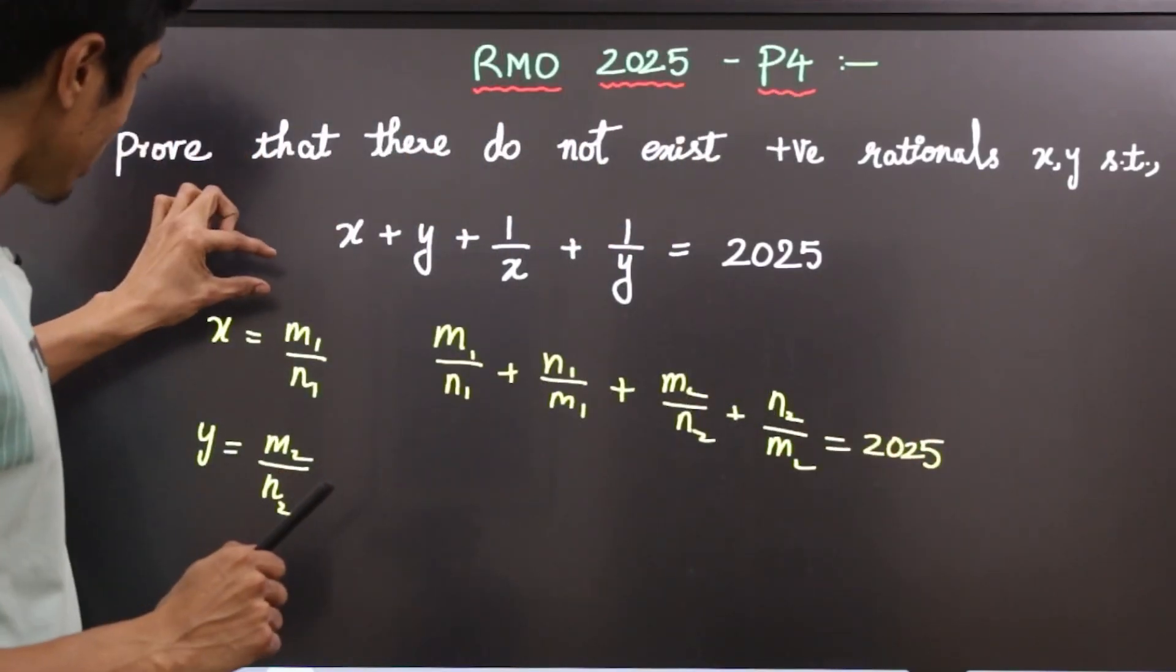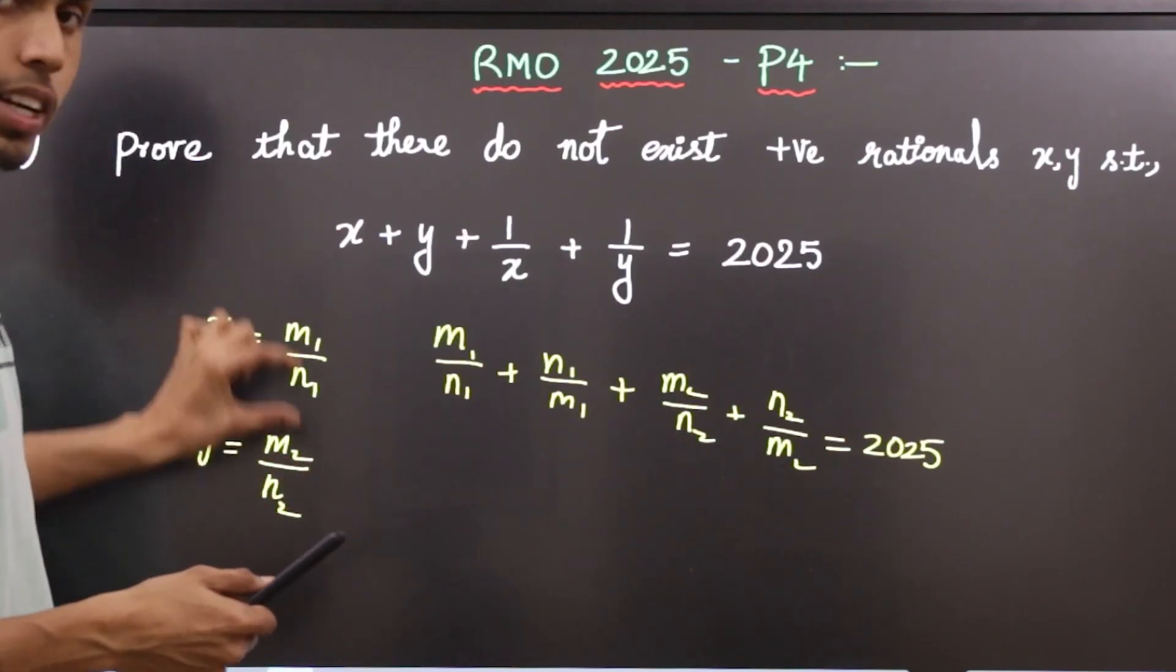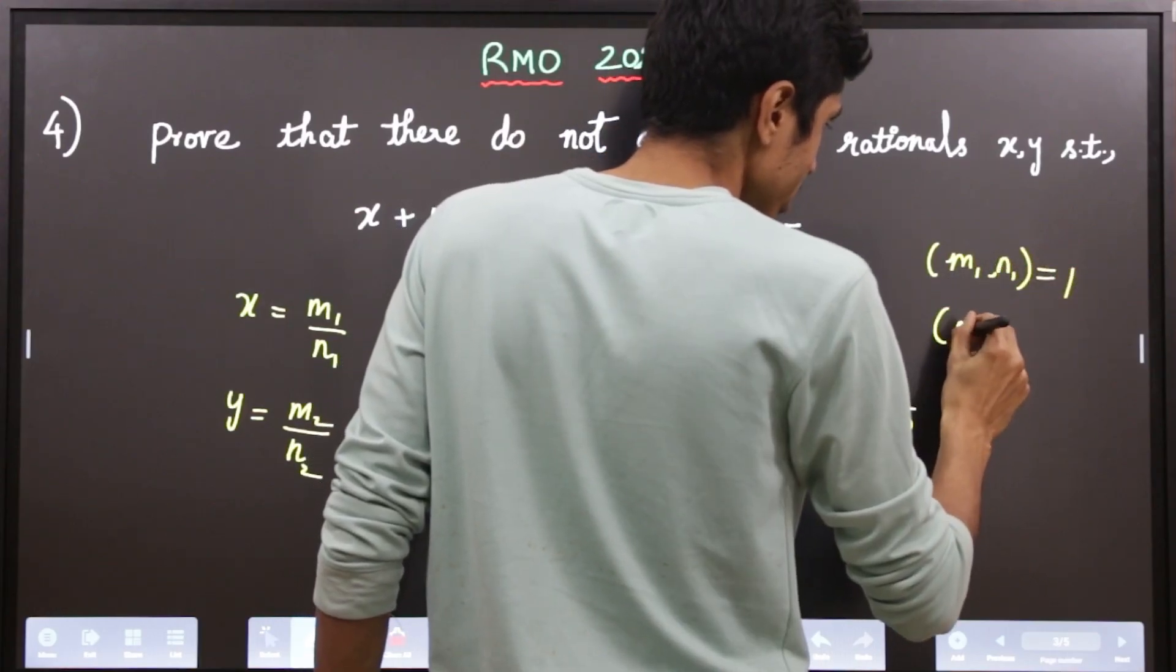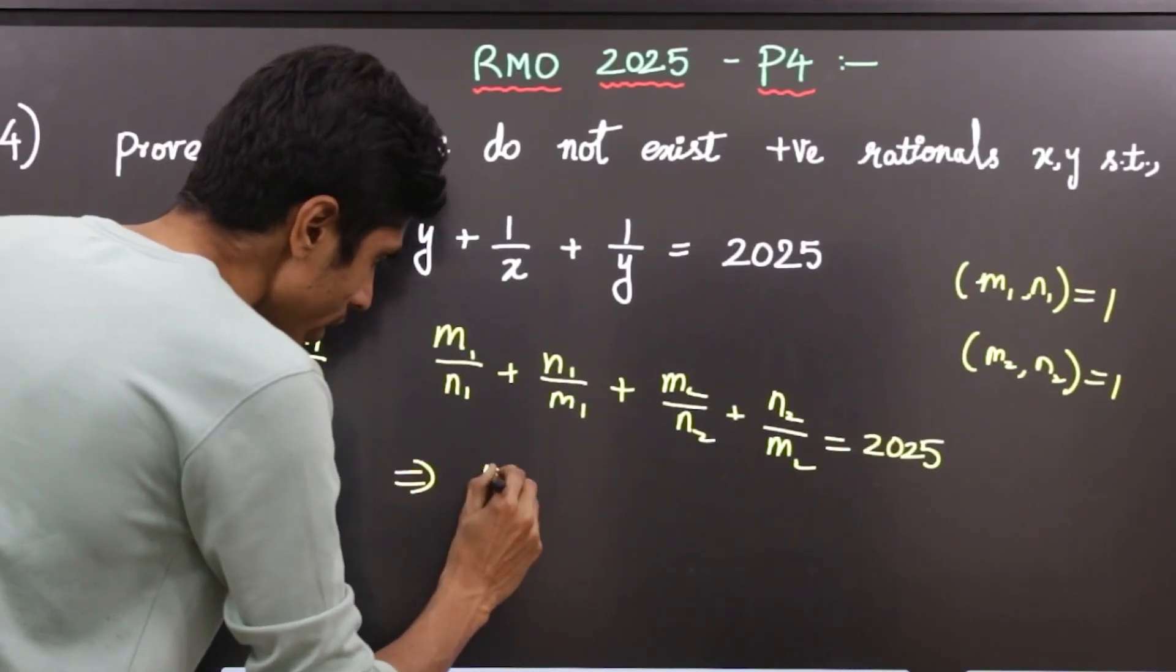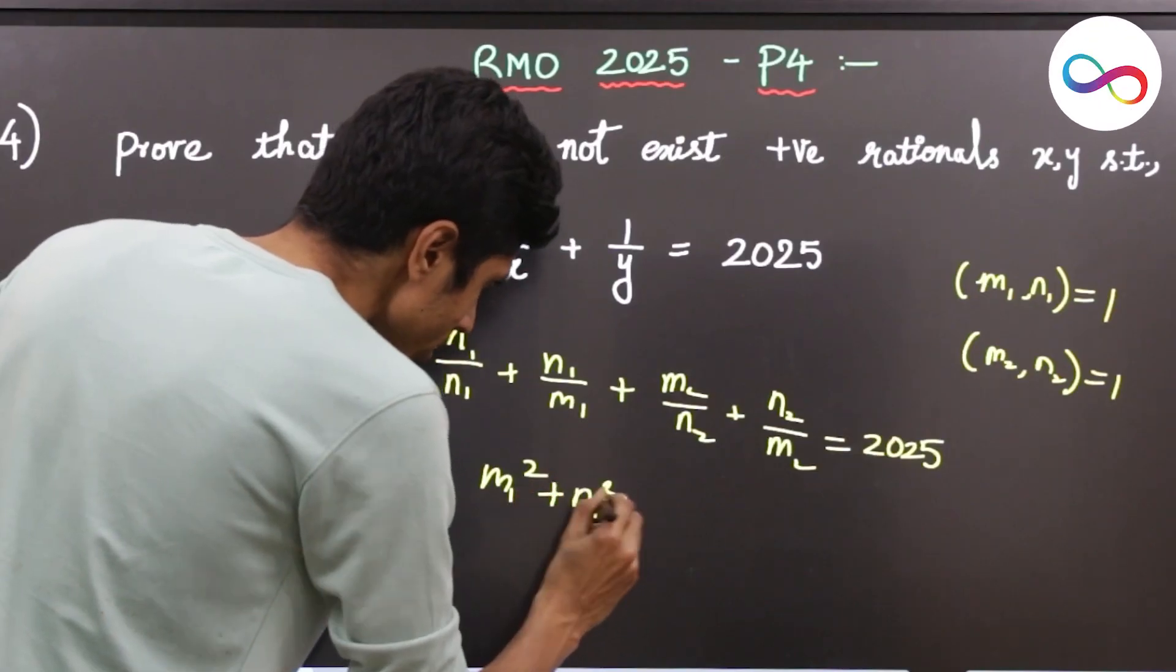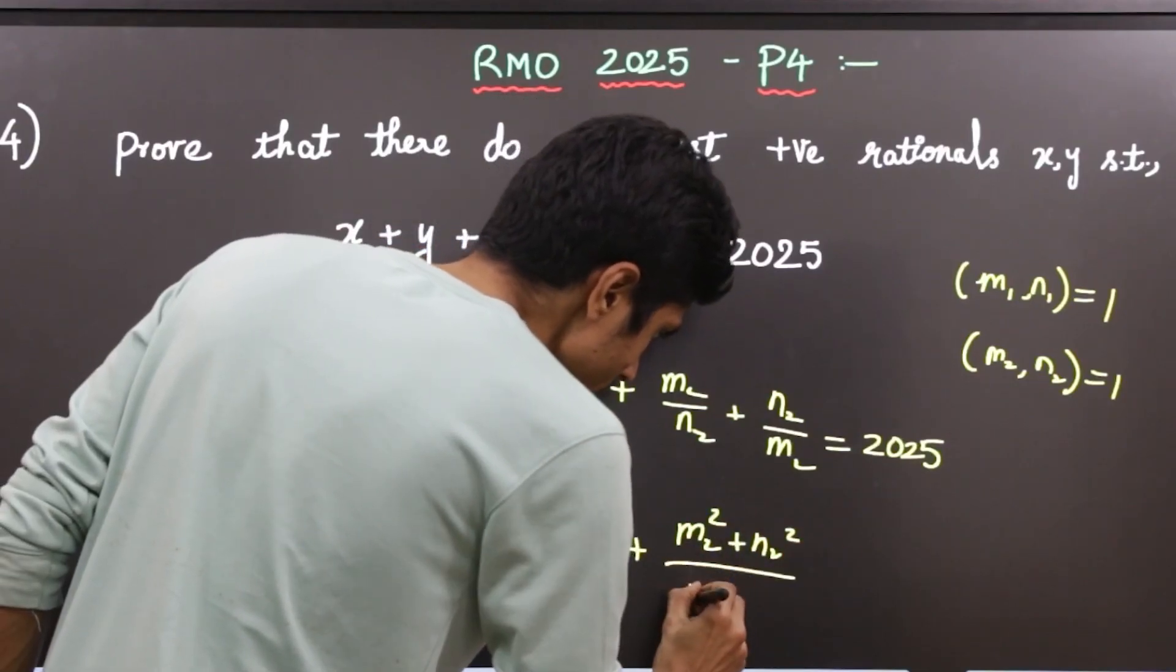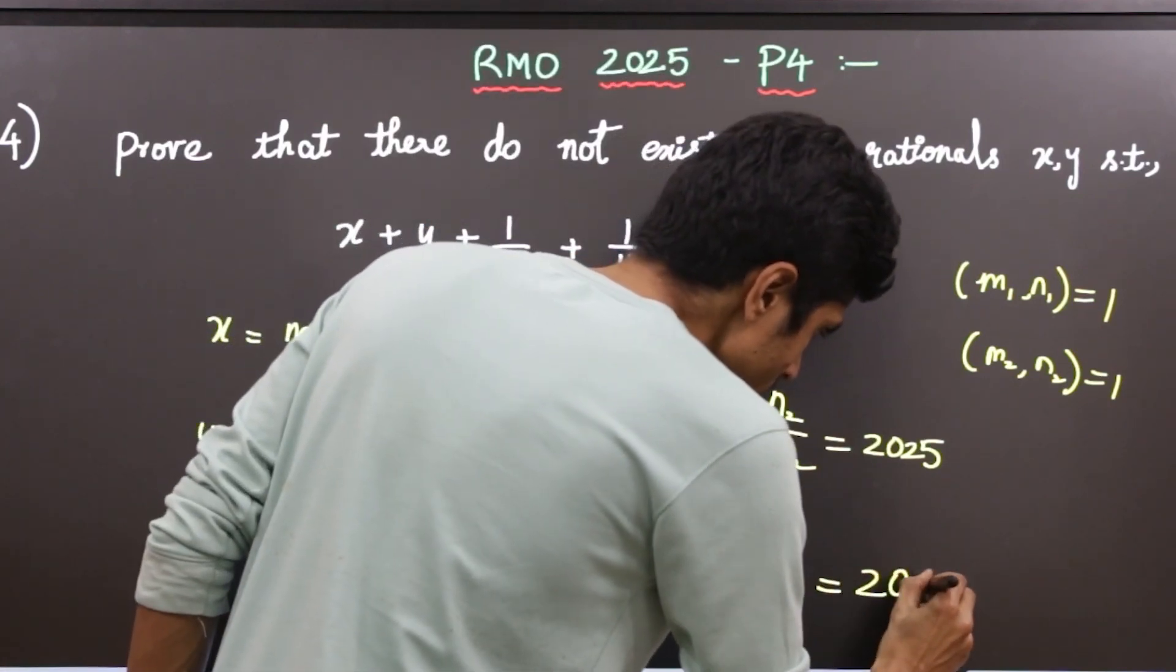Over here, I assume m1 and n1 are coprime to each other, m2 and n2 are coprime to each other. In other words, they are reduced fractions. Let's write it down: gcd(m1, n1) = 1 and gcd(m2, n2) = 1. Simplifying, you get (m1² + n1²)/(m1·n1) + (m2² + n2²)/(m2·n2) = 2025.